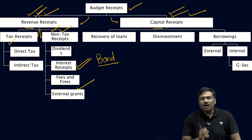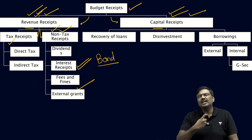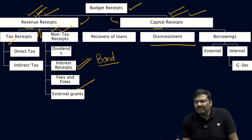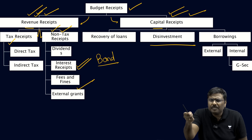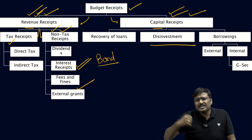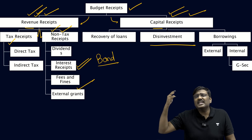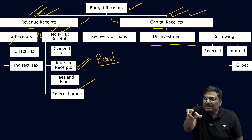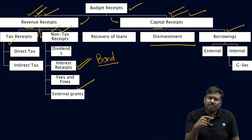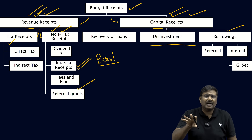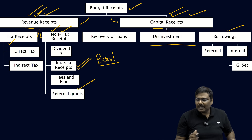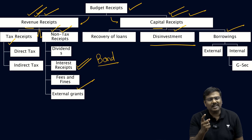Capital receipts include: recovery of loans given in the past, which changes the assets held by the Government of India; disinvestment, where the government sells ownership in a company where it had, say, 100%, 90%, or 76% ownership; and market borrowings — either from the domestic market or the external market — which are also counted as capital receipts. This covers total budget receipts.